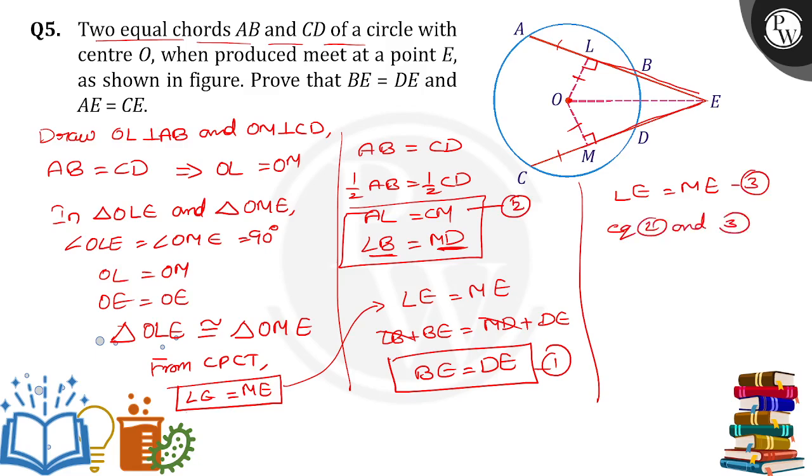Add equation 2 and equation 3. We will get AL plus LE is equal to CM plus ME. AL plus LE is nothing but AE, and CM plus ME is nothing but CE. So we proved that AE is equal to CE. Thank you.